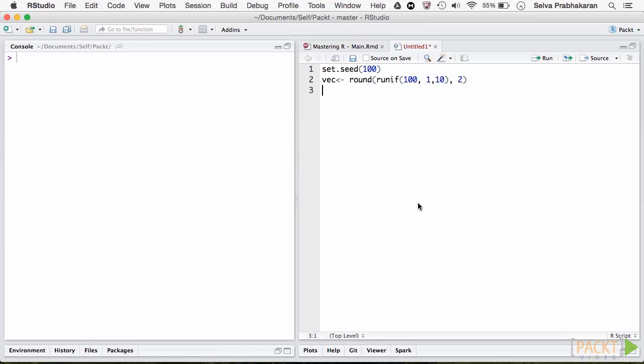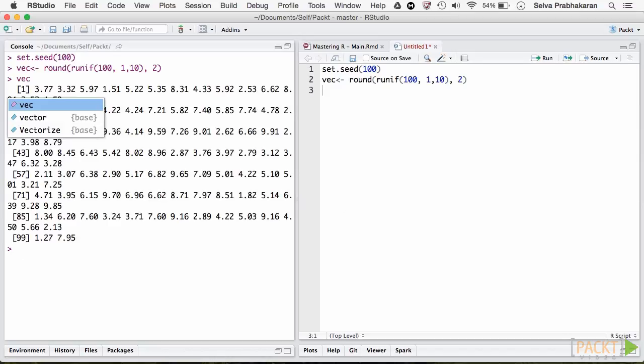A time series is any metric measured over regular time intervals. Common examples are the stock market indices, monthly sales data of a company, temperature measured on a daily basis, and so on.